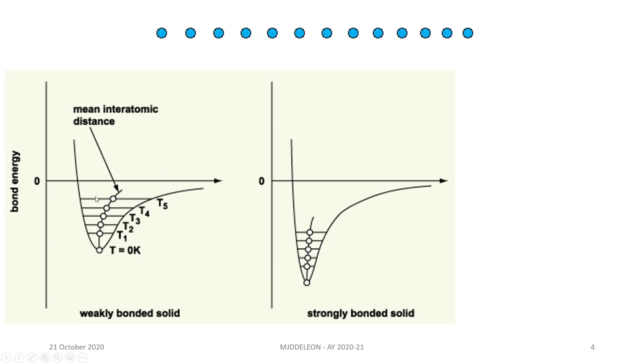We can see here two materials with two different bond energies. The first one on the left is a weakly bonded solid, while the one on the right is a strongly bonded solid. We can see the weakly bonded solid has a more asymmetric curve than the strongly bonded solid.